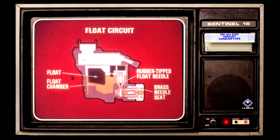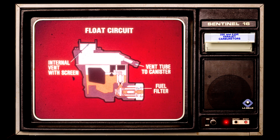The float circuits in both carburetors are identical. A single pontoon float, a rubber-tipped float needle, and a brass needle seat control the fuel level in the float chamber. The float chamber is internally vented through a vent cavity in the air horn with a small removable meshed screen at the top, and externally vented through a vent tube in the air horn connected to a vacuum operated vapor vent valve.